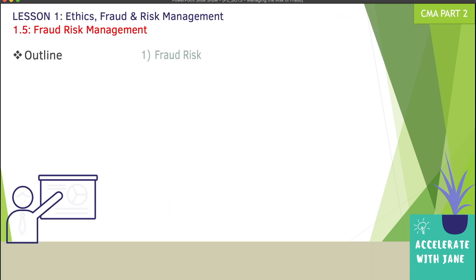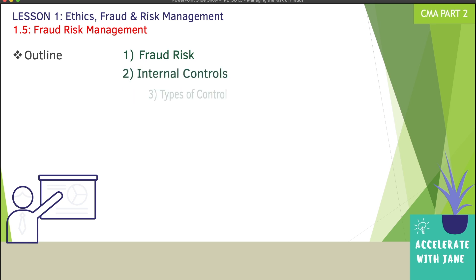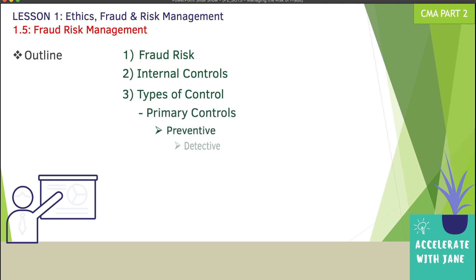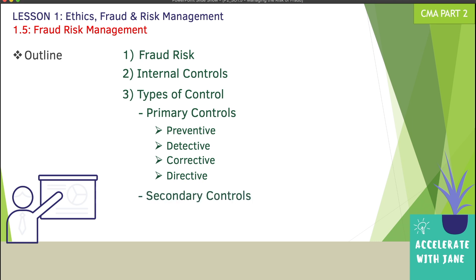For the outline of this lesson, first I'm going to talk about fraud risk. Second, I'm going to discuss internal controls. Third, the types of control. We have two categories: the primary controls and the secondary controls. Under primary controls, we have preventive, detective, corrective, and directive. For secondary controls, we have compensatory controls and complementary controls.